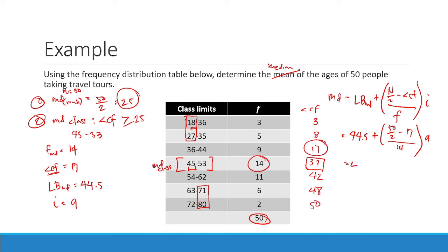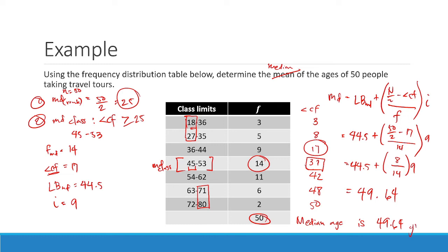Simplifying: 44.5 + [(25 − 17) / 14] × 9 = 44.5 + [8/14] × 9. Computing with a calculator: 44.5 + (8 divided by 14 times 9) equals approximately 49.64. So the median age is 49.64 years old. That is our final answer.